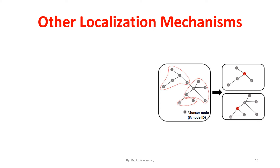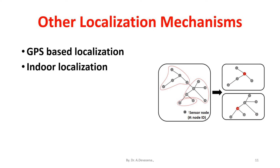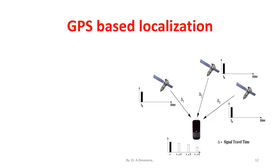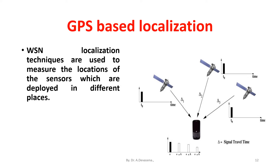Some of the other localization mechanisms used in wireless sensor networks are GPS-based location, indoor location, and sensor network localization. In GPS-based localization, the location of sensor nodes will initially start with the available a priori knowledge of positions of a few sensors present in the network.